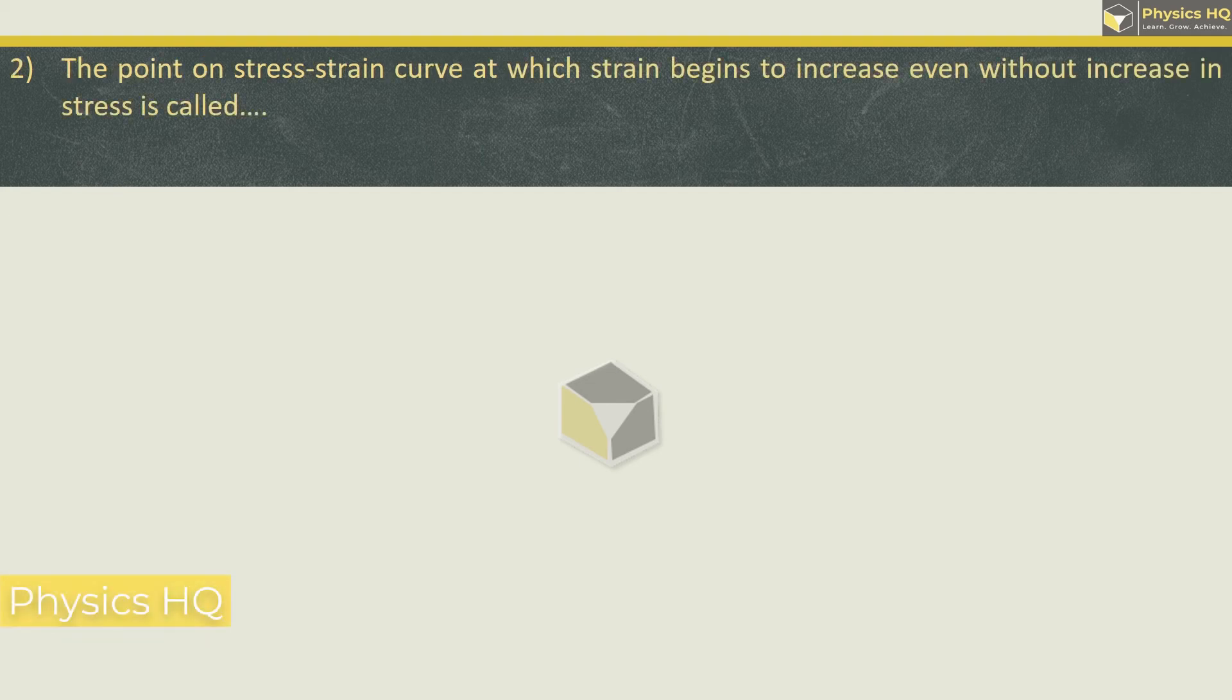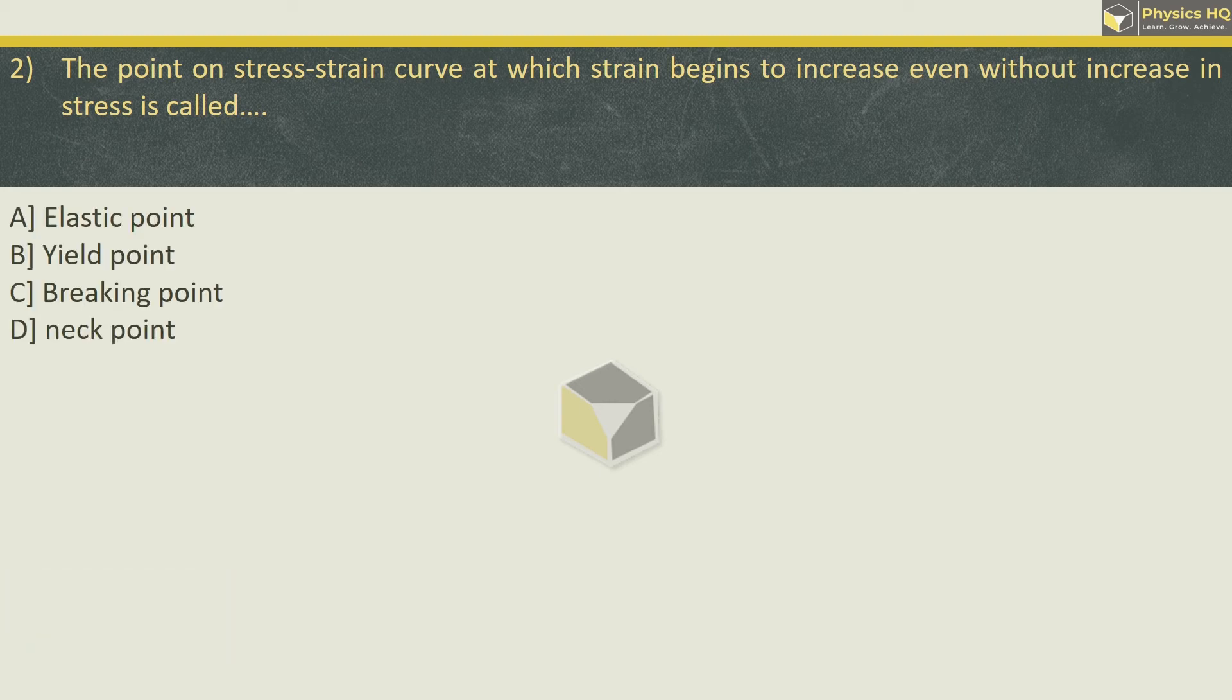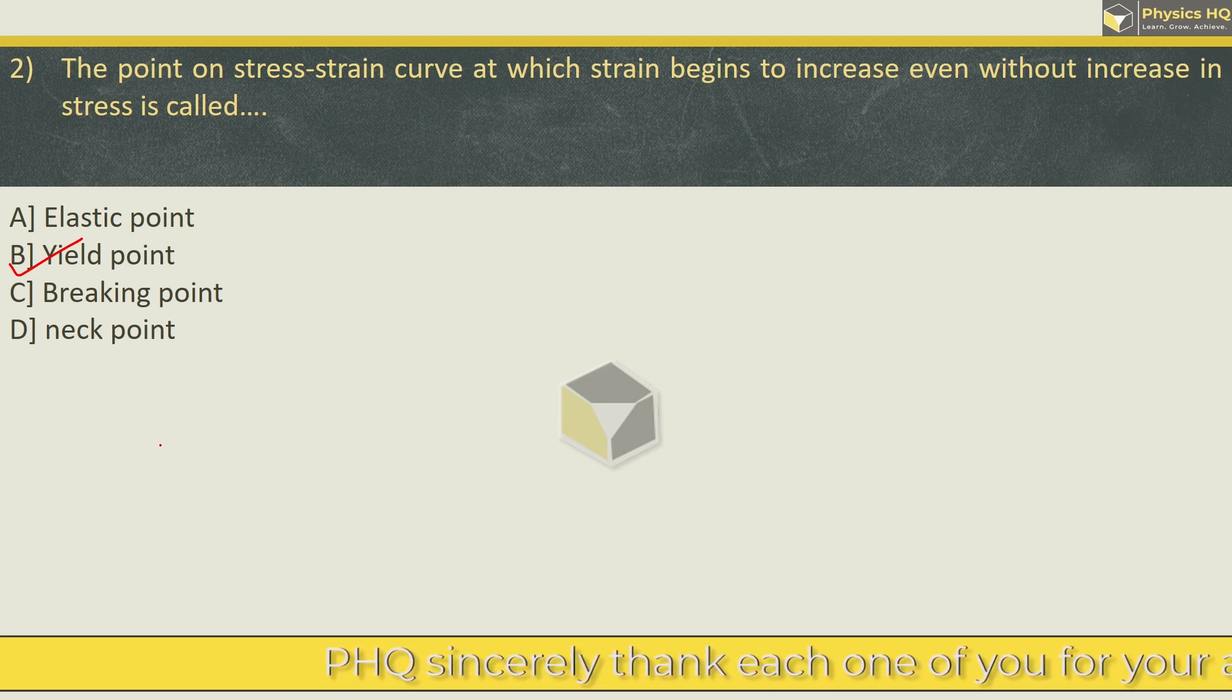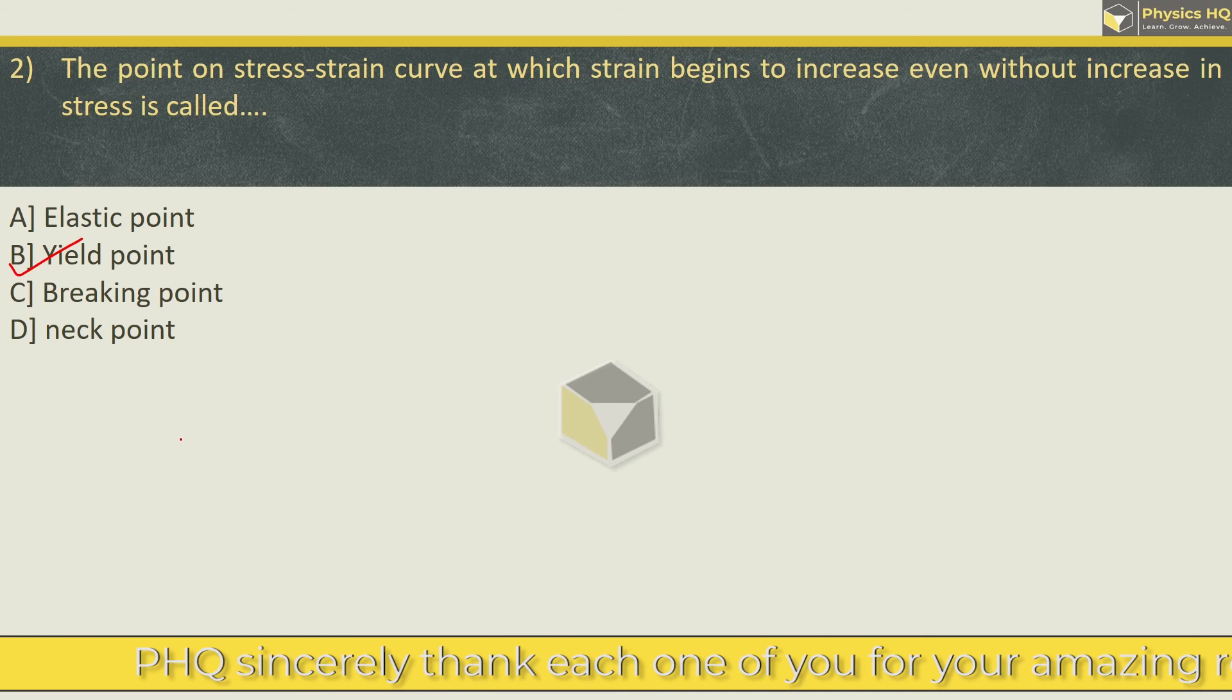The point on stress strain curve at which strain begins to increase even without increase in stress is called Elastic Yield, Breaking, or Neck Point. The correct option over here is Yield Point. After the yield point, even without any increase or with very little increase in stress, the strain increases significantly.